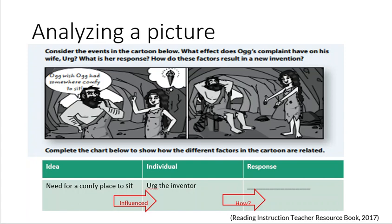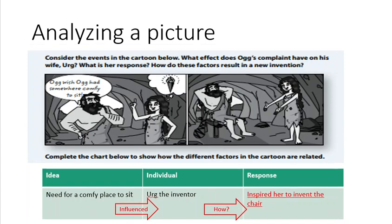Let's look at our dialogue boxes. Oakes wishes he had somewhere comfy to sit, and Erg gets an idea. In the next frame, Oakes has a chair. Looking at the chart, the idea is that they need a comfy place to sit, the individual is Erg — she's the inventor. The response is: Oakes' comments caused Erg to become inspired to invent the chair.